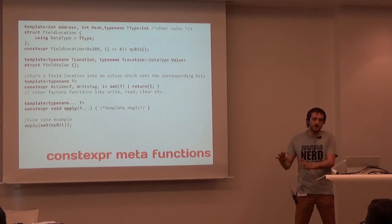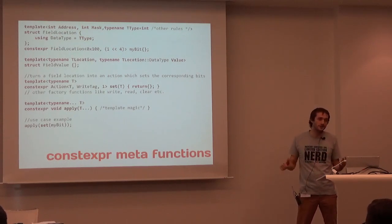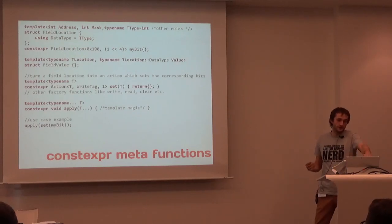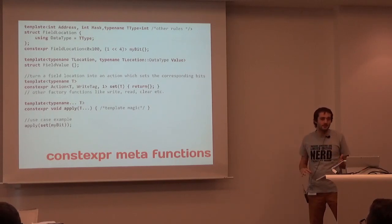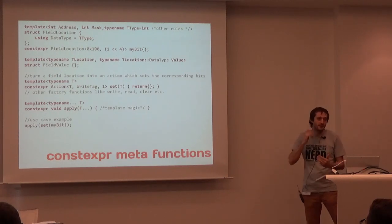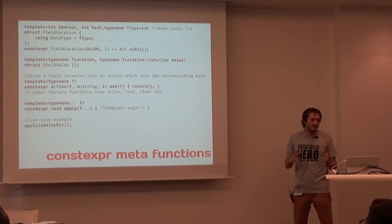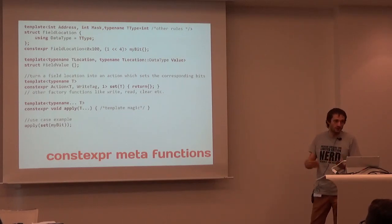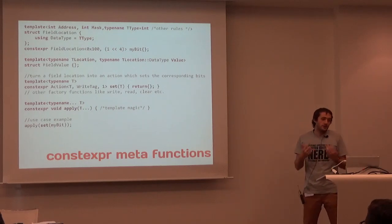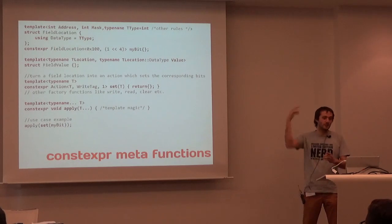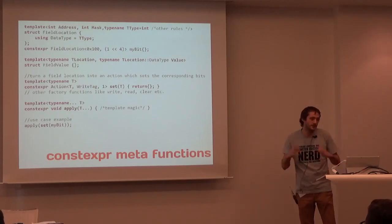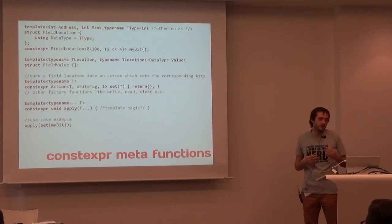We want to make an abstraction layer above these hardware registers, but it has to be at least zero cost or no one is going to use it. To get to zero cost, if you look at this first struct field location, it doesn't have any data members. But you can put data in it in its template parameters. If you look at our instantiation, it's a constexpr and it doesn't have data — so this is not even in debug mode will you see this. Because it's a variable, we can pass it to constexpr functions. We don't care about the data — there is none. But we take the template parameters out and return a different type from this function. This is called the constexpr meta function pattern.